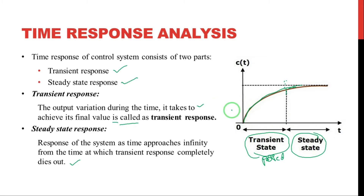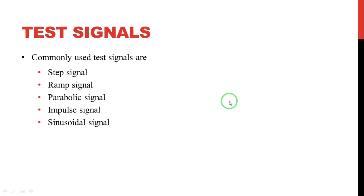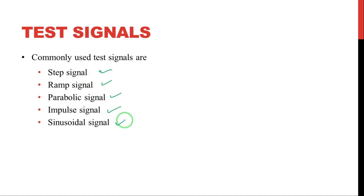Now for physical system time response analysis, we need some test signals. Every physical system has an input. The test signals we use are: step signal, ramp signal, parabolic signal, impulse signal, and sinusoidal signal. For example, a fan's input could be a sinusoidal signal generated by a function generator, which we then apply for time response analysis.